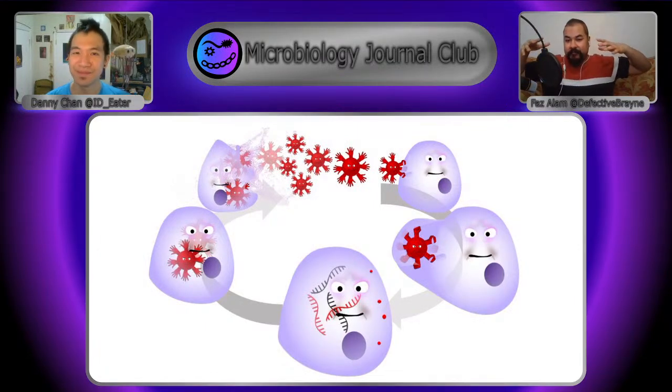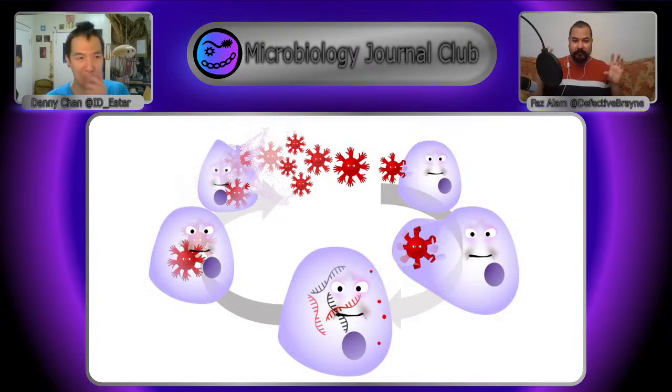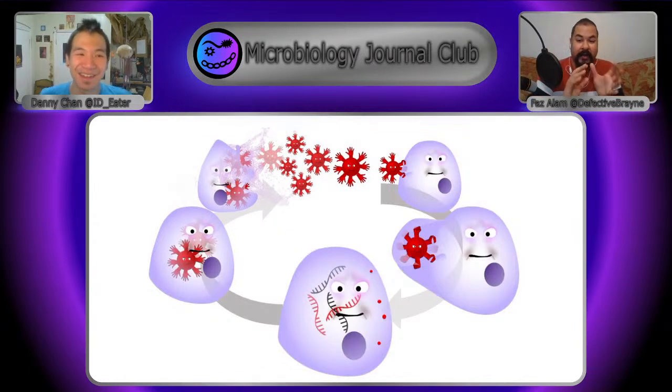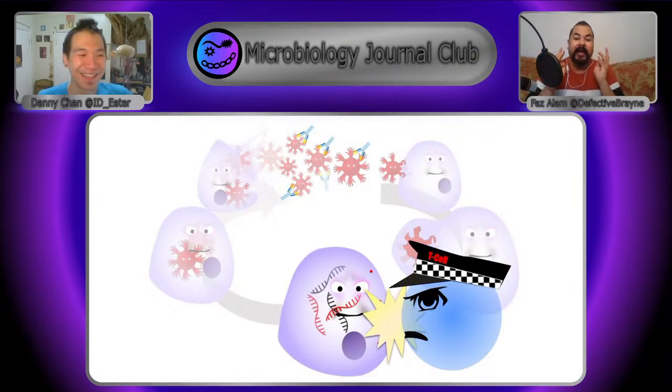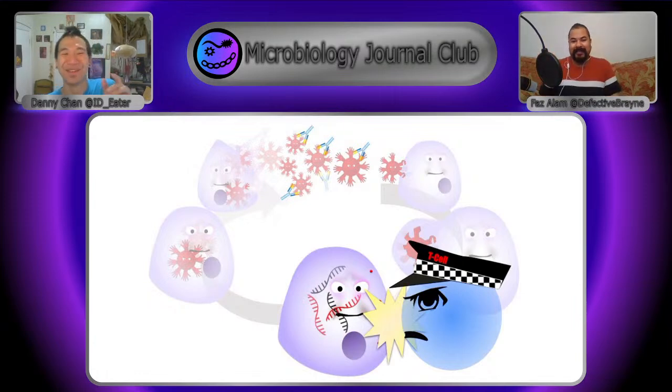A brief overview of the infection cycle: there are two main phases where the virus is vulnerable — either outside the cell where it can be attacked by antibodies, or inside the cell where it can be attacked by T-cells. T-cells look at your cells to check whether something is wrong, but they can't see inside them, so they have to check what's on the surface.